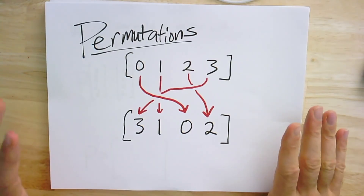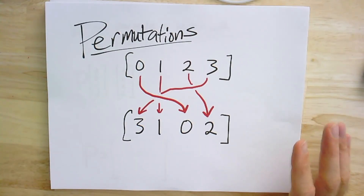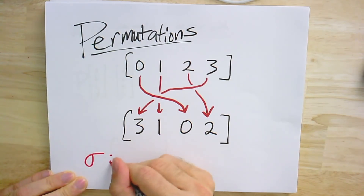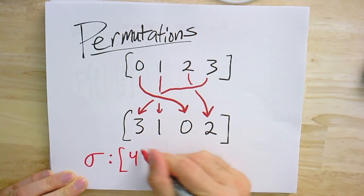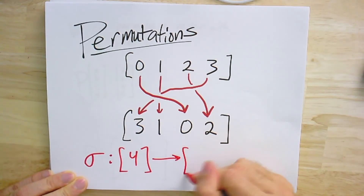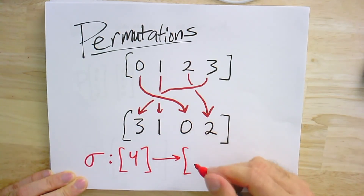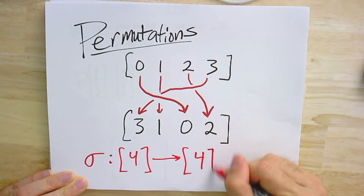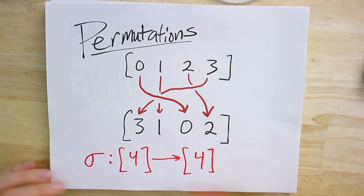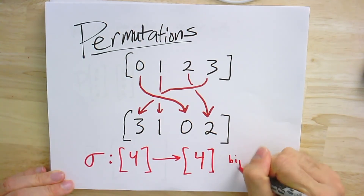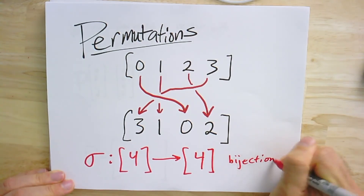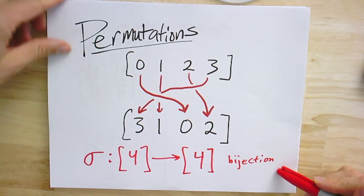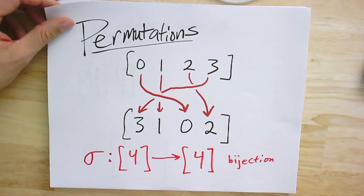You can think of this permutation as a kind of function. In this case, it's a function from 4 to 4 — the numbers from 0 up to 3 inclusive. And it's a bijection. That's really important: when you permute stuff, you can un-permute it. So there's an inverse as well.